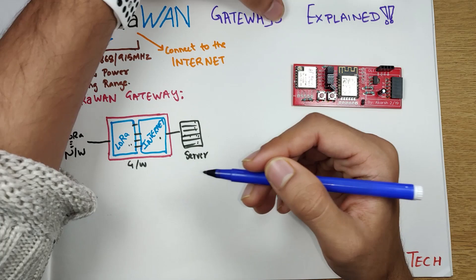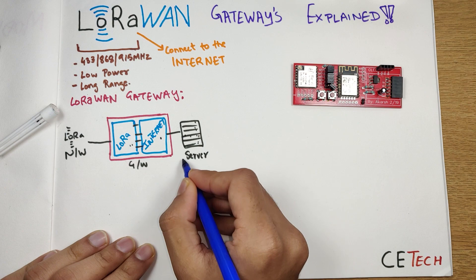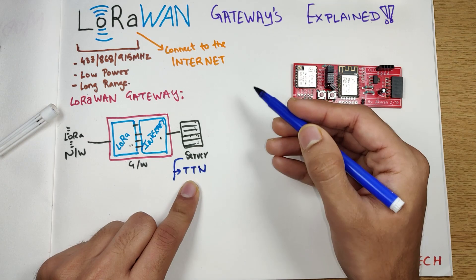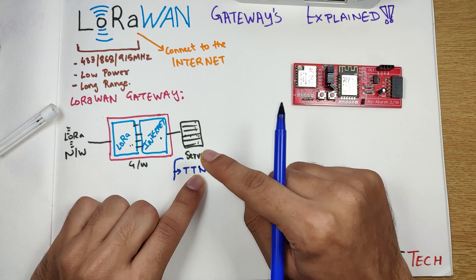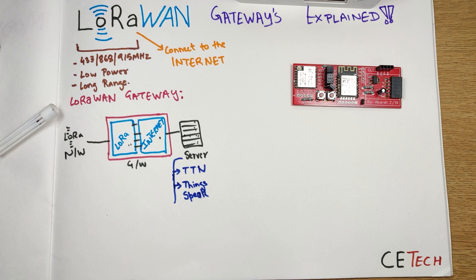Connecting the gateway to a server is an interesting part. You can do it yourself by manually hard-coding things on your gateway and setting up your own server, but with the popularity of LoRaWAN there are some well-known server platforms. One of these is The Things Network, or TTN — one of the most famous servers where you can put your data for free. You can connect your gateway to the Things Network and even use other people's gateways for transmitting your data.